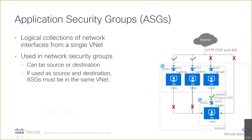Application security groups are a logical collection of network interfaces — essentially a way to do attribute-based access rules. For example, you can have one ASG for your web servers and another for VMs talking to a database server, then apply rules to the ASGs instead of individual subnets or interfaces. Ultimately this becomes rules on the network interface, but gives you the convenience of attribute-based security.